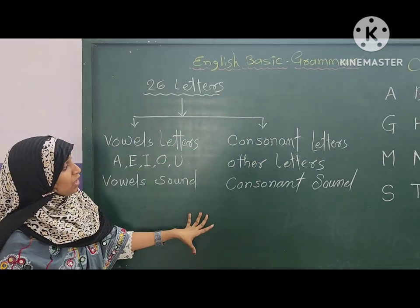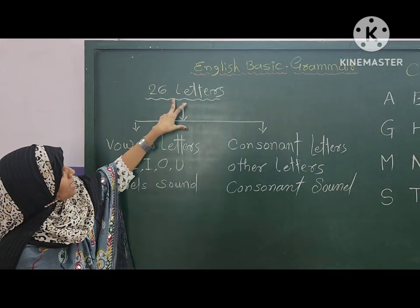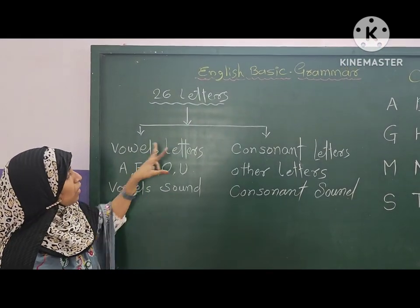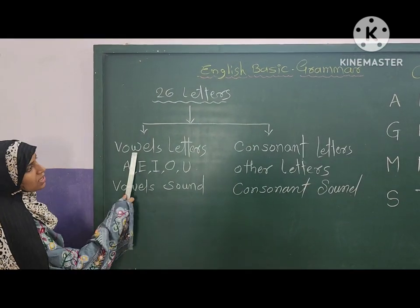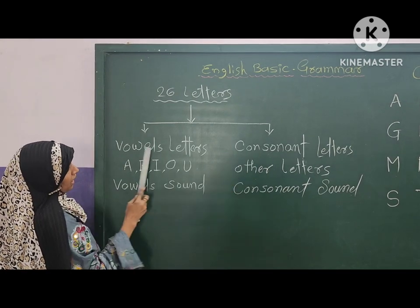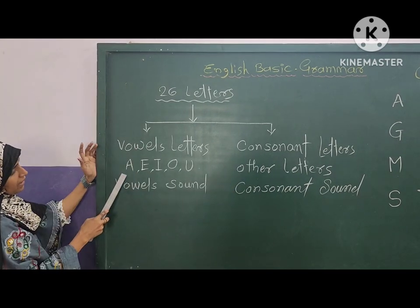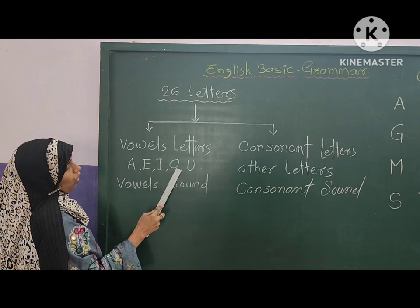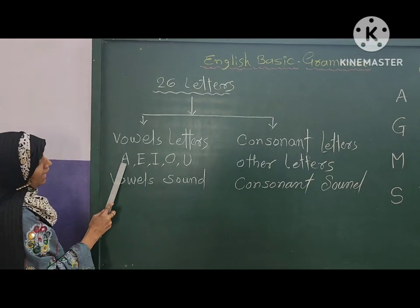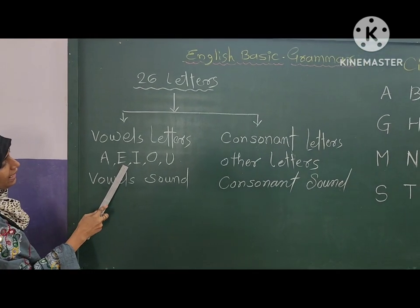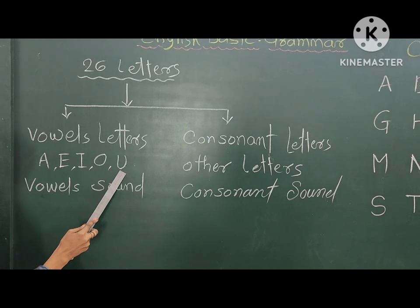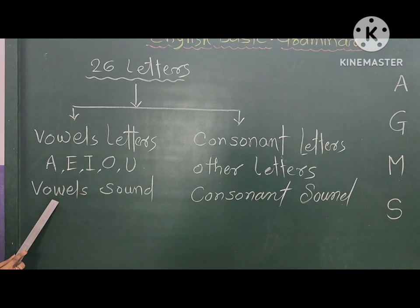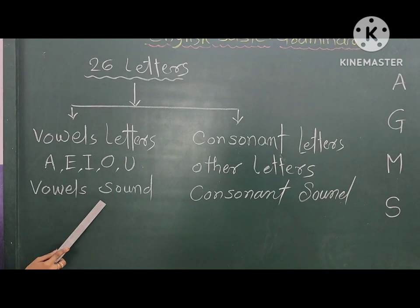Our basic grammar starts with knowing that there are 26 letters: A, B, C, D... They are divided into two parts — vowels and consonants. The vowels are five letters: A, E, I, O, U. These are called vowel letters, and they are dependent on the vowel sound.